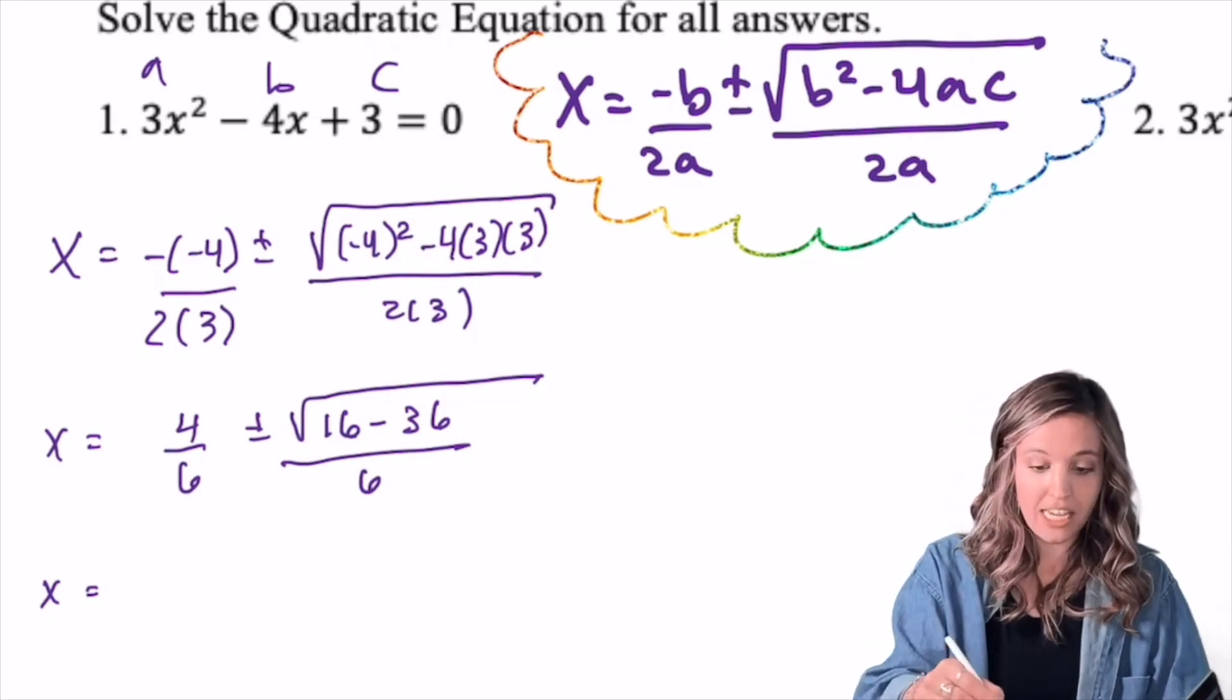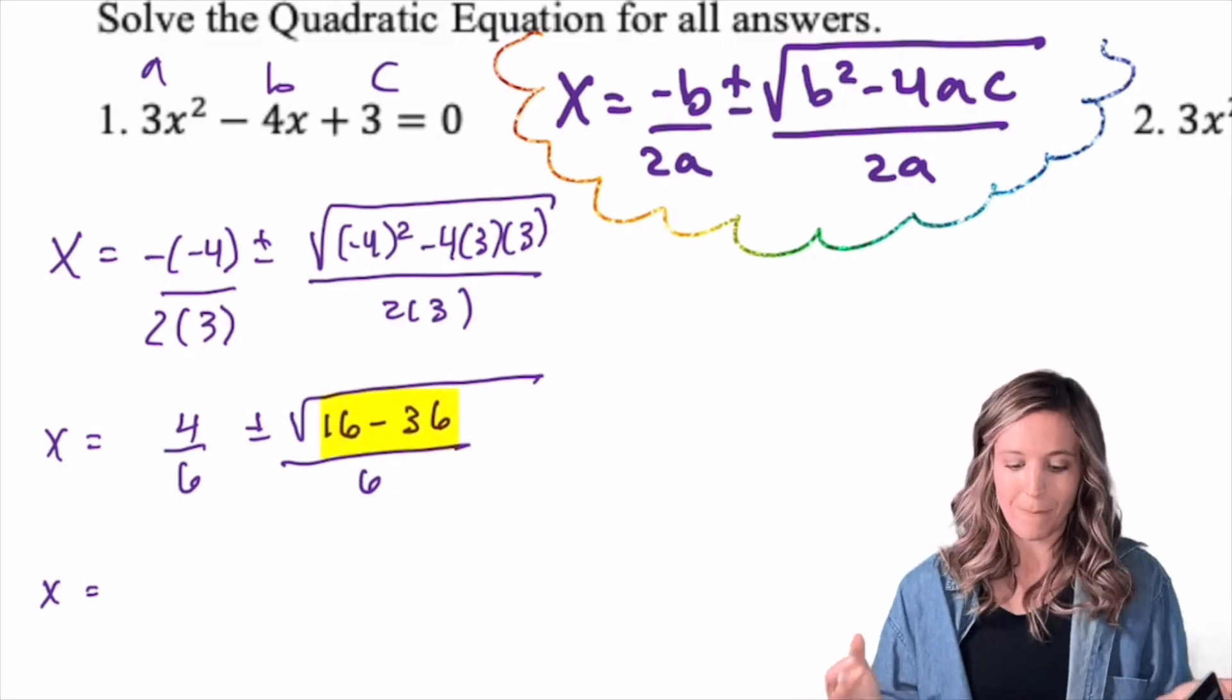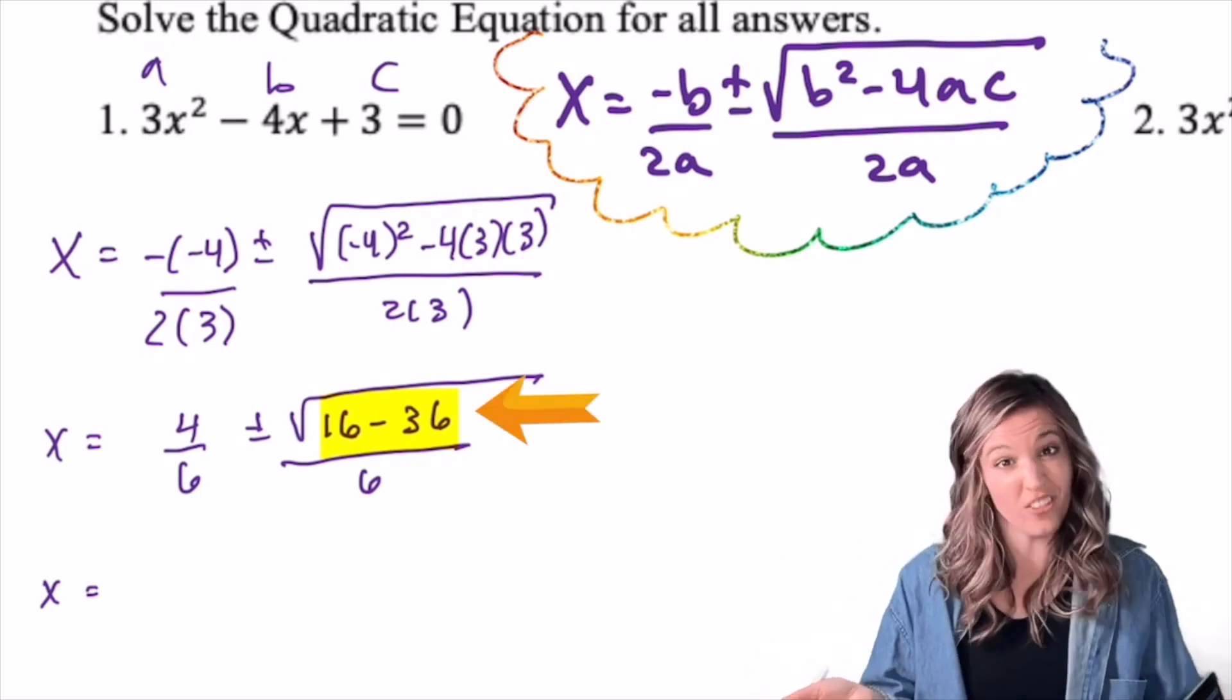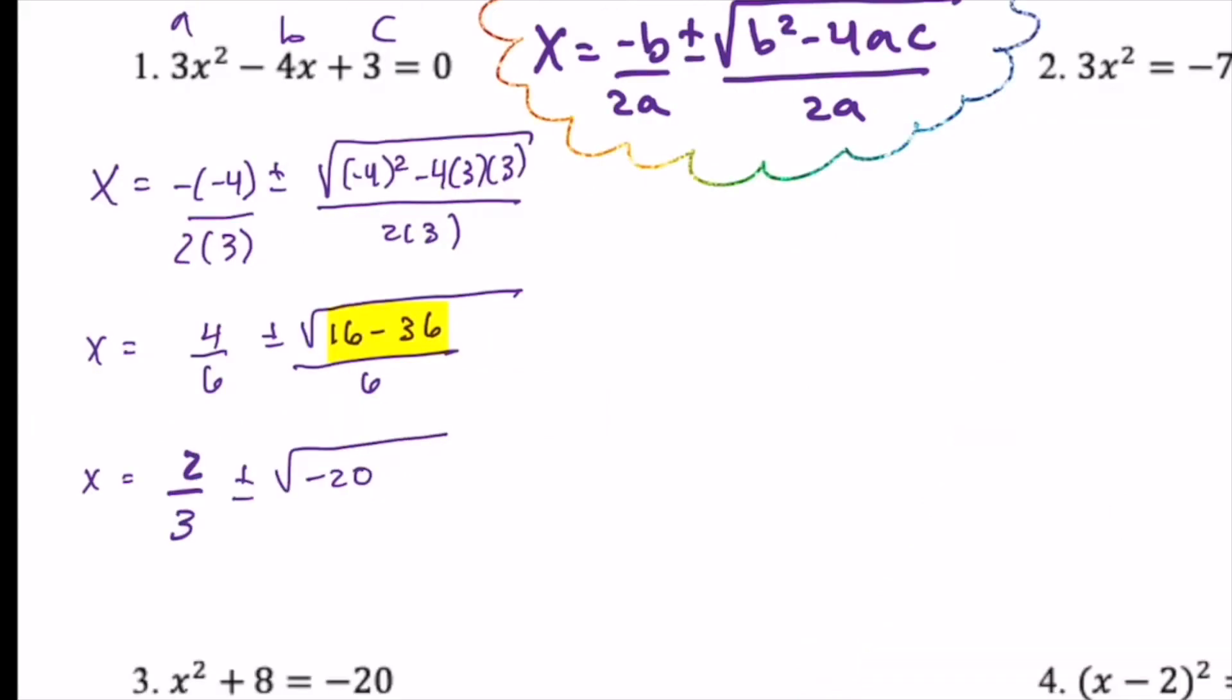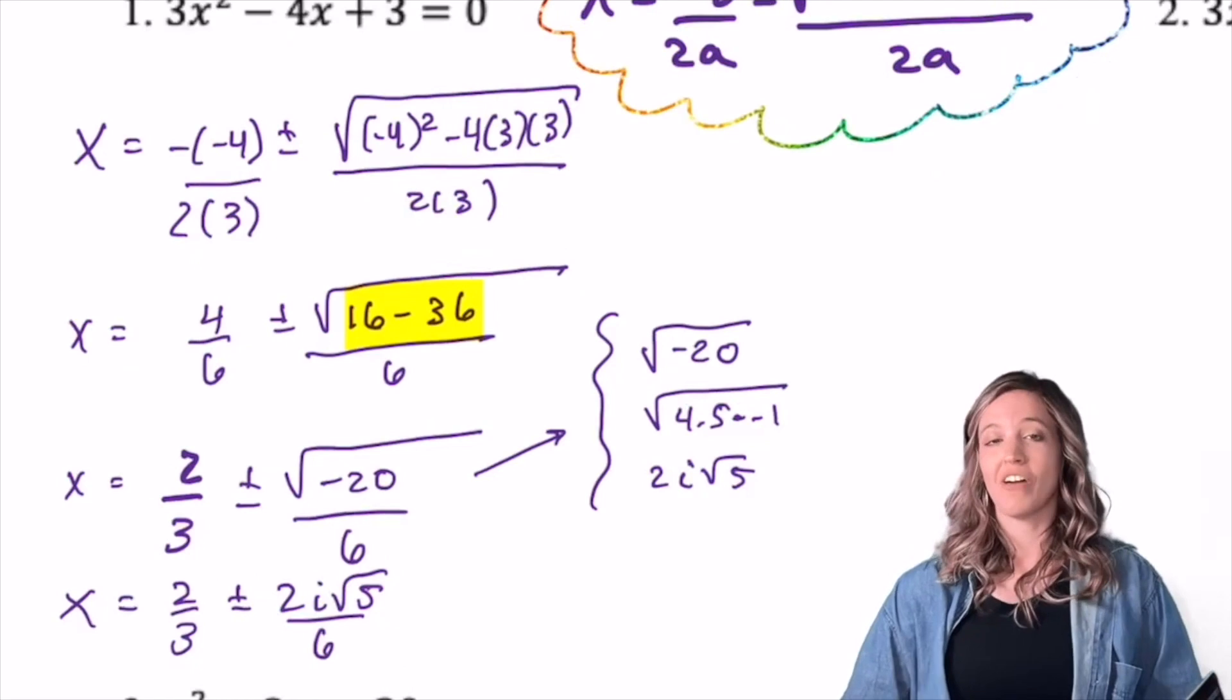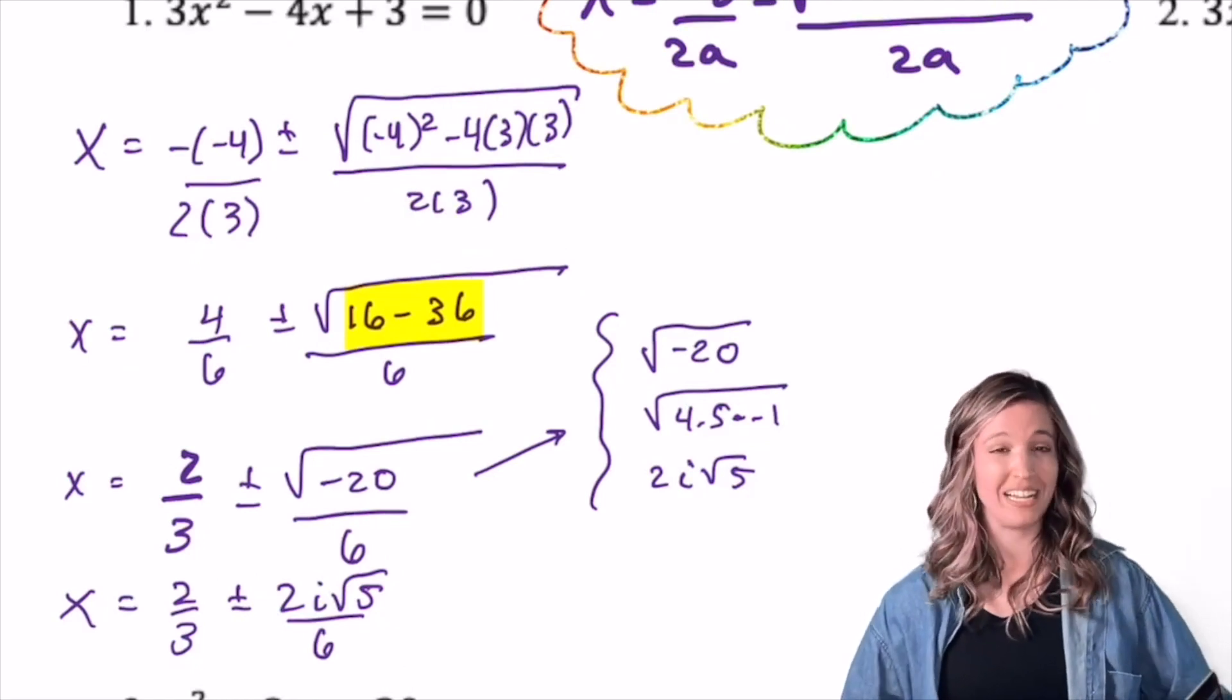So I plugged into my quadratic formula, and right here at this step, I have 4/6 ± √(16 - 36)/6. Well, right here, I already can tell that I'm going to end up with complex solutions, imaginary numbers, because I have that 16 minus 36 that's going to end up being negative underneath my square root. That's called the discriminant, b² - 4ac.